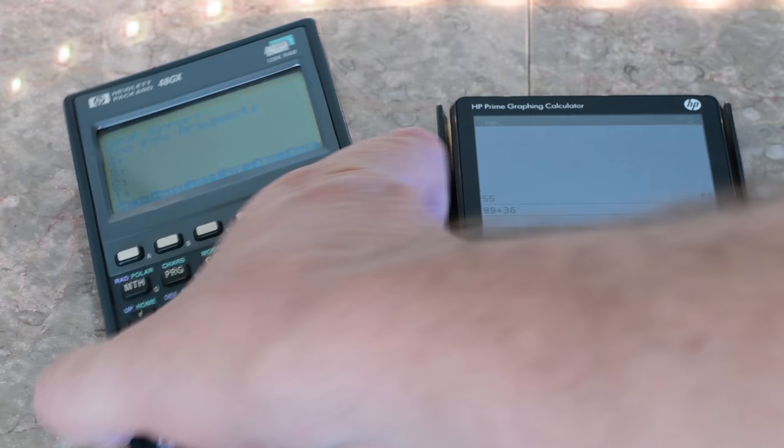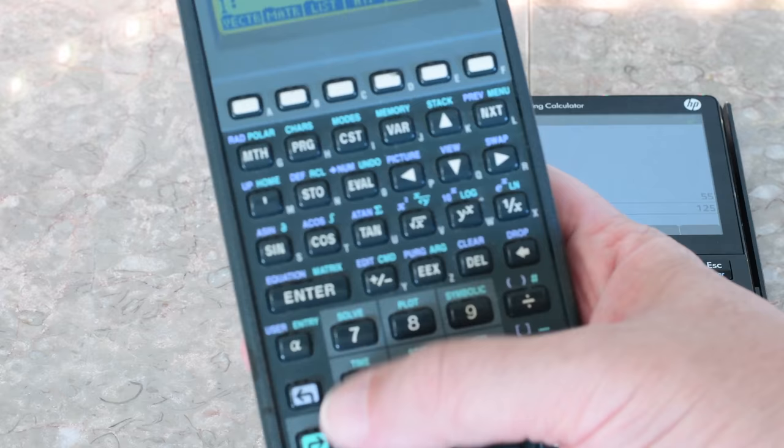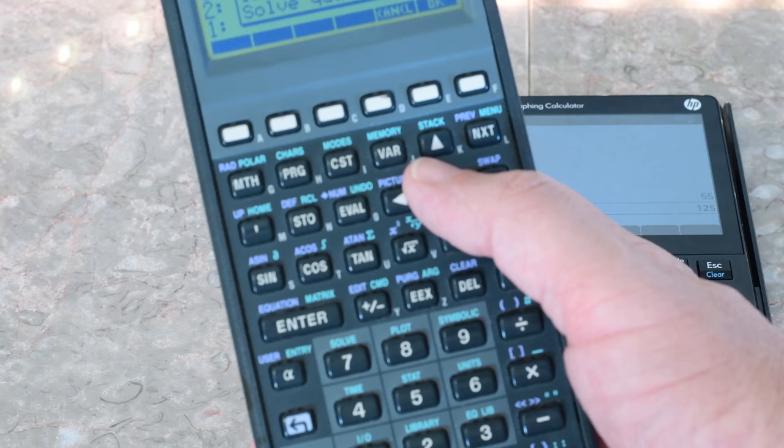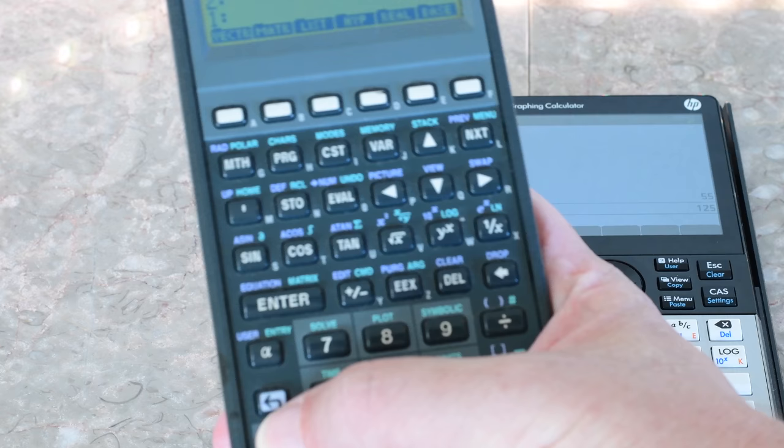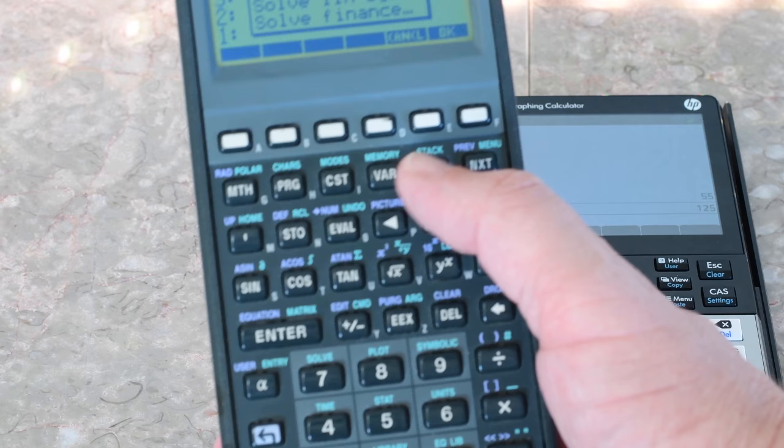Adding something up, of course, is no delay. But if you remember on the 48 GX, say we were to try to do that same finance solver, we'd go to, oh sorry, not symbolic, but solve. Go to solve. Solve finance.